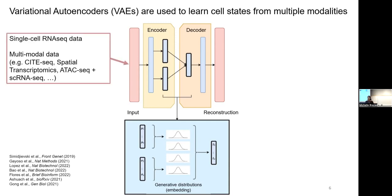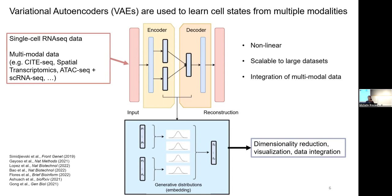Such VAEs have been used for single cell RNA-seq data and also importantly they've been used for multimodal data, for example, for CITE-seq. And this learned latent space has been used for things like dimensionality reduction, visualization, and data integration. And what makes them so popular is that they're nonlinear models that are scalable to large data sets, and they allow for the integration of multimodal data.